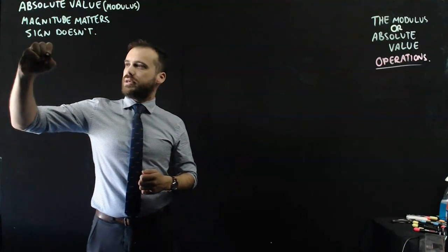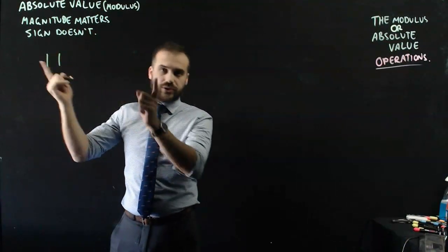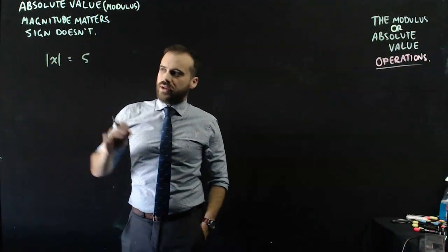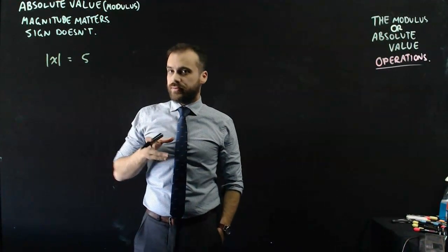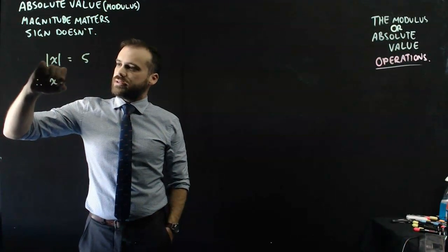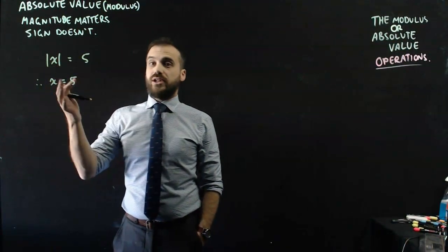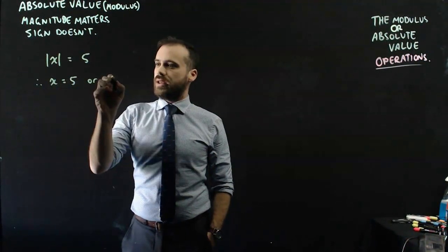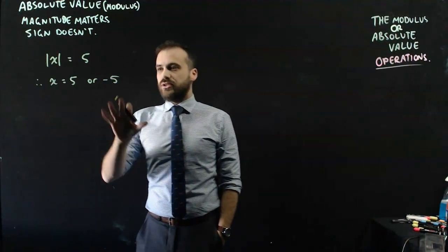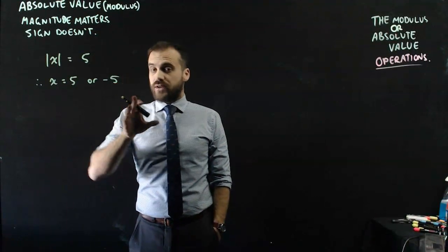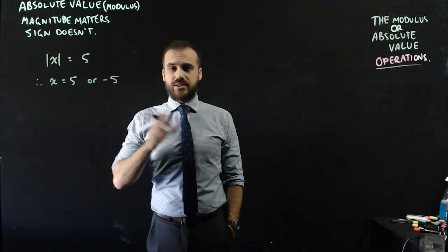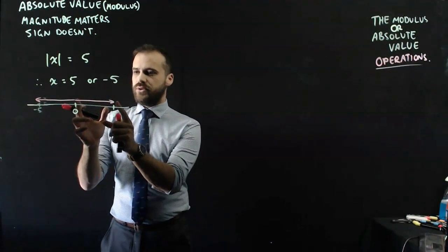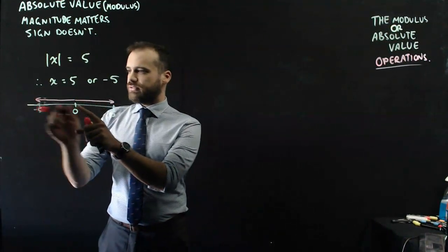An example of this might be: the absolute value — we use two vertical lines to denote absolute value — of x is equal to 5. Now, x could be two things here. Therefore, we can say that x is equal to 5, because the absolute value of 5 is 5, the magnitude of 5, or negative 5, because the absolute value of negative 5 is 5, the magnitude of 5.